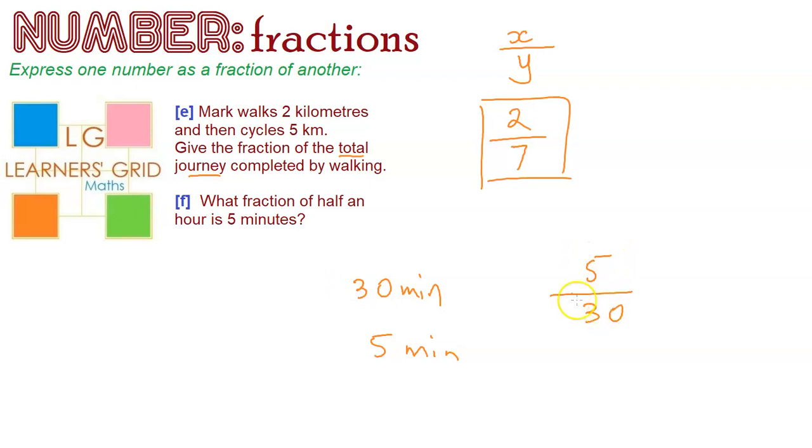5 out of 30 is the fraction, right? But I can simplify this. 5 divided by 5, 30 divided by 5. So that becomes 1 over 6. And that's as far as it goes. What fraction of half an hour is 5 minutes? 1 sixth.